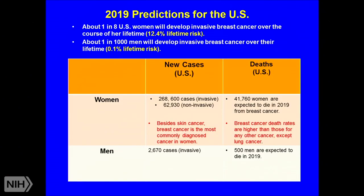The American Cancer Society says women in the United States have a 12.4 percent lifetime risk of developing invasive breast cancer; men have a 0.1 percent lifetime risk. Predictions for 2019 are that 268,000 new cases of invasive breast cancer will be diagnosed, and 41,760 women will die of their disease. Breast cancer is second only to skin cancer in new cases and second only to lung cancer in mortality.